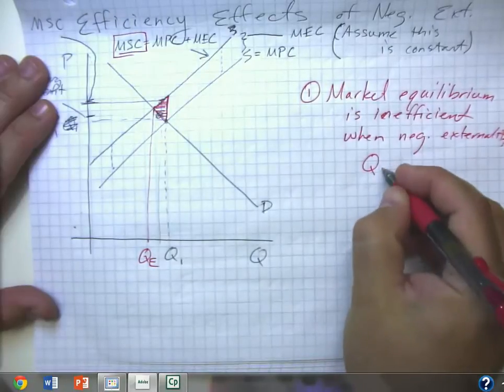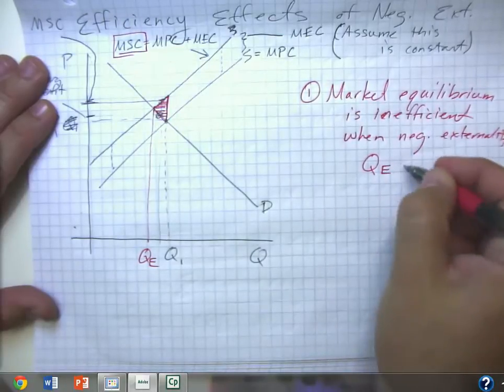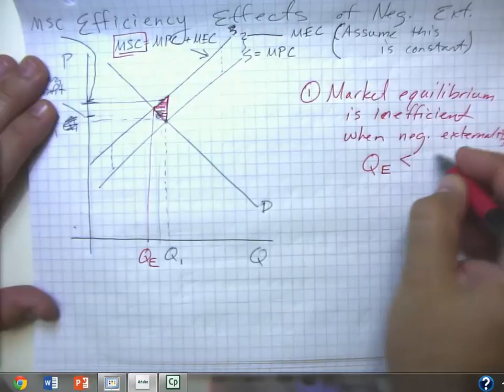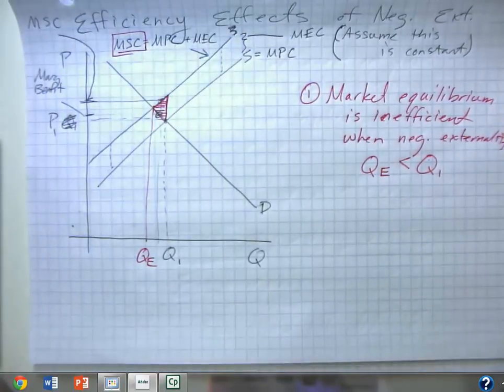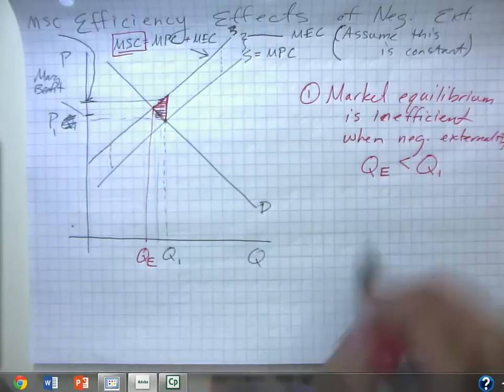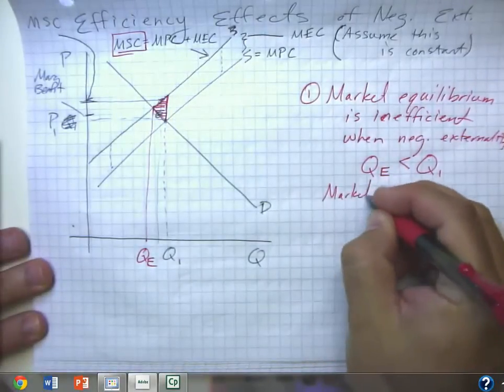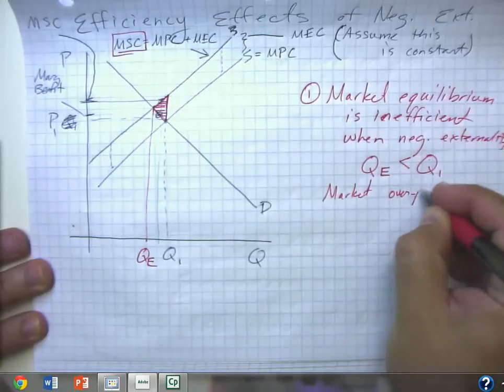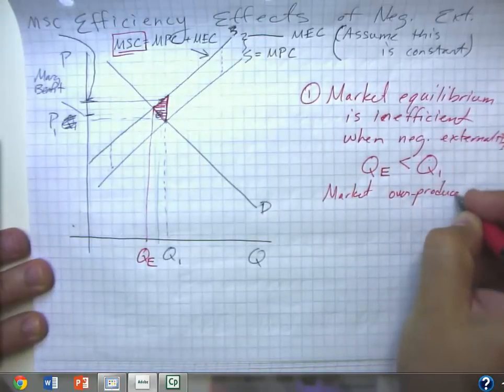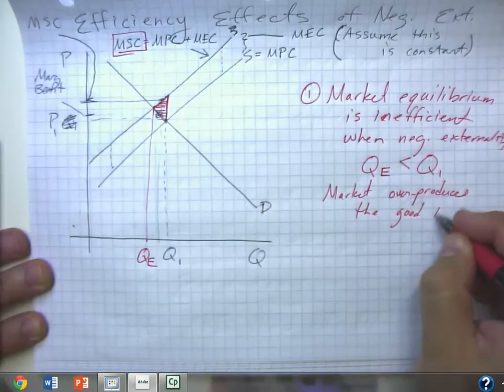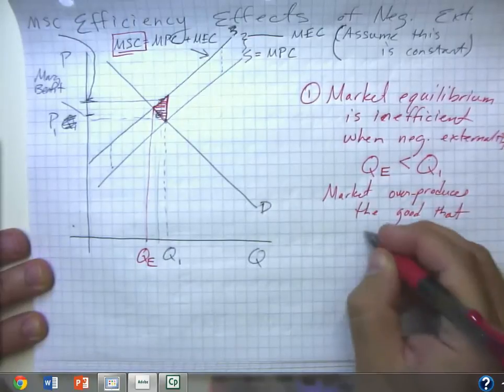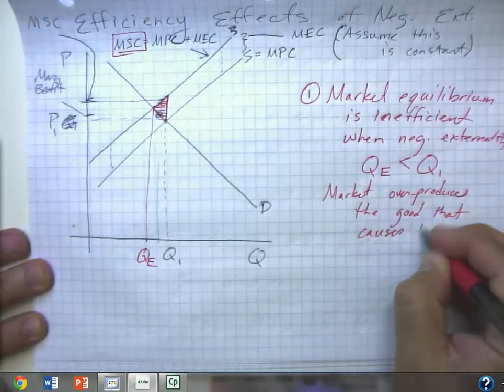So notice the efficient quantity is less than Q1, our market quantity. So the market overproduces the good that causes the negative externality.